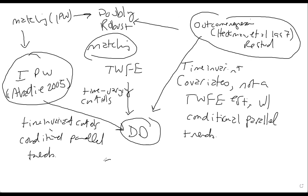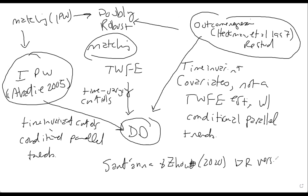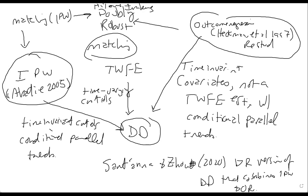What Santana and Zhao do is they create a doubly robust version of diff-in-diff that combines IPW and outcome regression, just like Hirano and Imbens had done in matching. Hirano and Imbens had done it in matching; Pedro is going to do it in diff-in-diff.